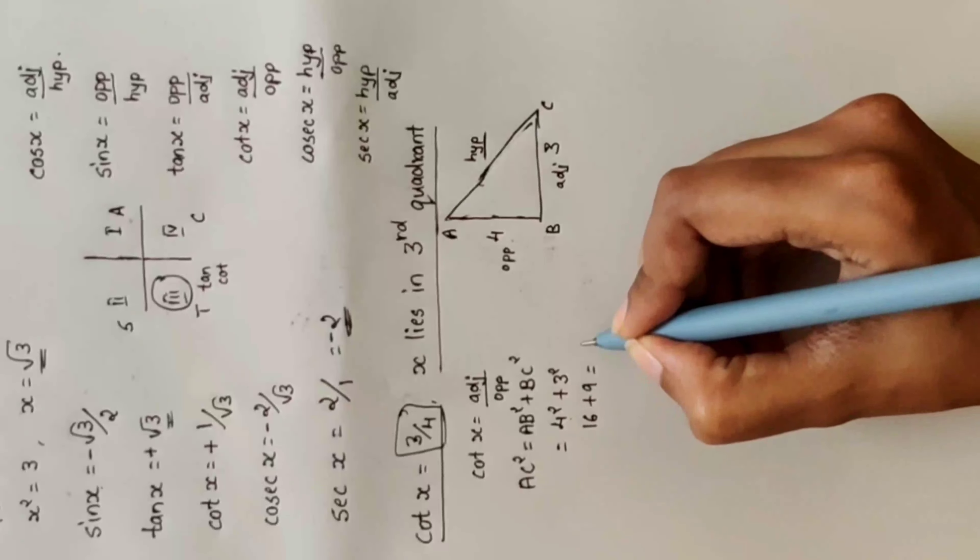Let's move to the next question. Tan x = minus 5 by 12 and x lies in the second quadrant. Tan x = opposite divided by adjacent — that is the formula.